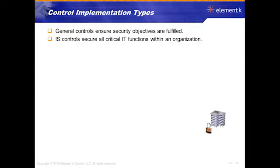When we implement controls, realize a control is not merely a technical thing like requiring a password of a certain length or a group policy on Windows. A control is any policy, procedure, method, technical implementation, software product, or physical measure — anything to help minimize and mitigate risk and keep it at a manageable level. It really starts with a policy, and it really starts with an attitude at the very top — a corporate culture set by the tone of the people at the very top, and then it goes all the way down.